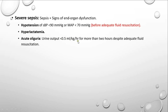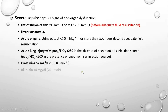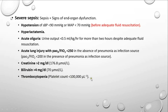Further examples of end organ dysfunction include: acute lung injury with a PaO2/FiO2 ratio of less than 250, indicating hypoxemia; creatinine of more than 2 mg/dL, indicating kidney hypoperfusion; bilirubin of more than 4 mg/dL, indicating liver dysfunction; thrombocytopenia with a platelet count of less than 100,000, indicating platelets being consumed by ongoing endothelial dysfunction; and an INR of more than 1.5, indicating ongoing activation of the coagulation and fibrinolytic systems simultaneously.